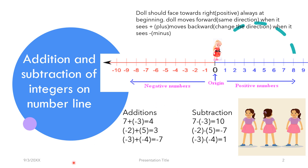For example, here I am taking a doll. By using this doll I am doing a small activity to introduce additions and subtractions. When the doll sees a plus value, the doll has to move towards the right side, and when the doll sees a minus value, the doll has to move towards the left.